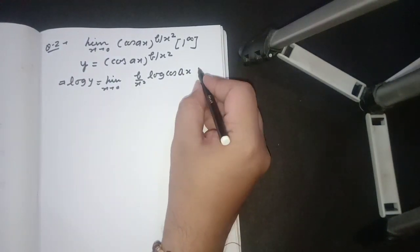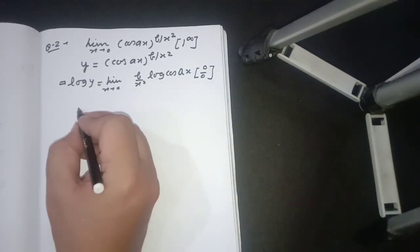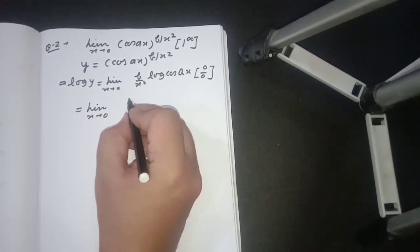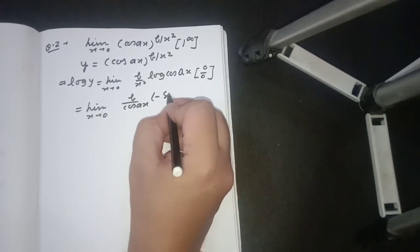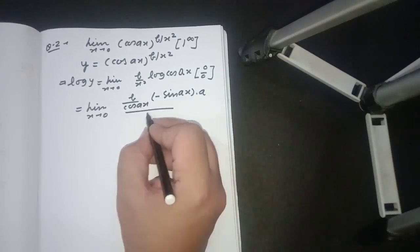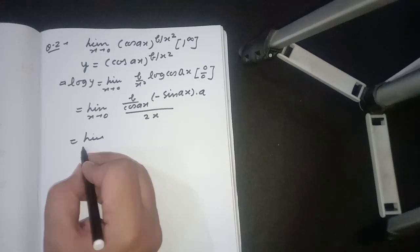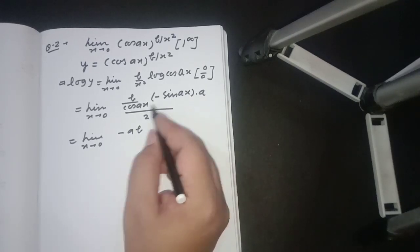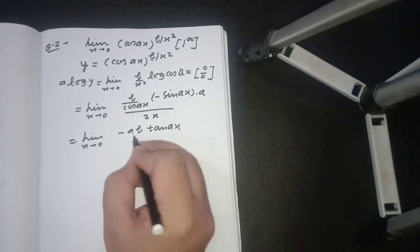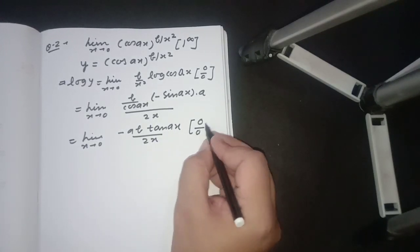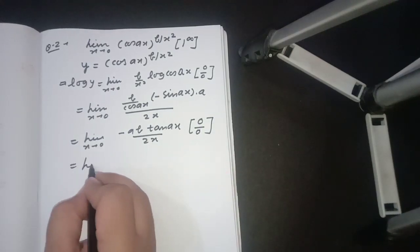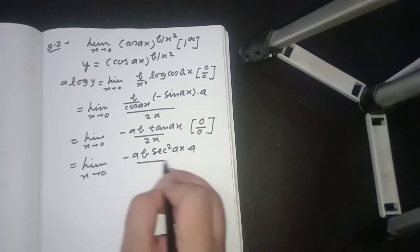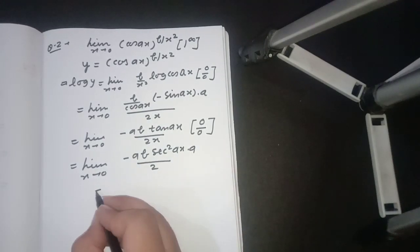Now it is in the form of 0 upon 0, so we use L'Hôpital's rule and differentiate. The numerator differentiates to b upon cos(ax) times minus sin(ax) times a, and the denominator differentiates to 2x. Writing it in simplified form gives minus ab times tan(ax) upon 2x. Again it is 0 upon 0, so differentiate once more, giving limit x tends to 0 of minus ab sec²(ax) times a upon 2. The form is removed; putting in sec(0) = 1 gives minus a²b upon 2.